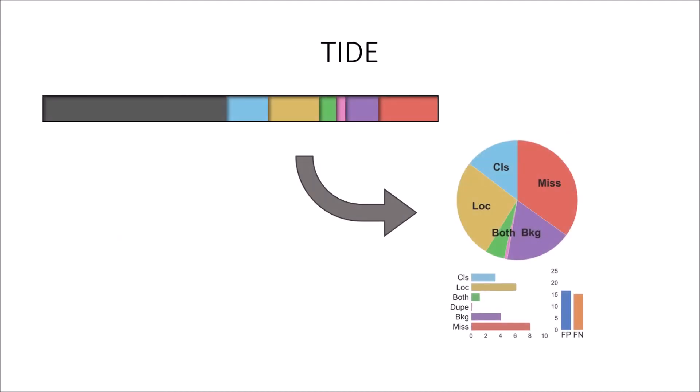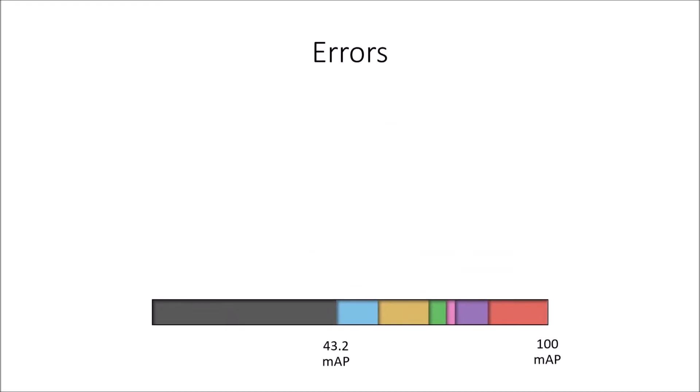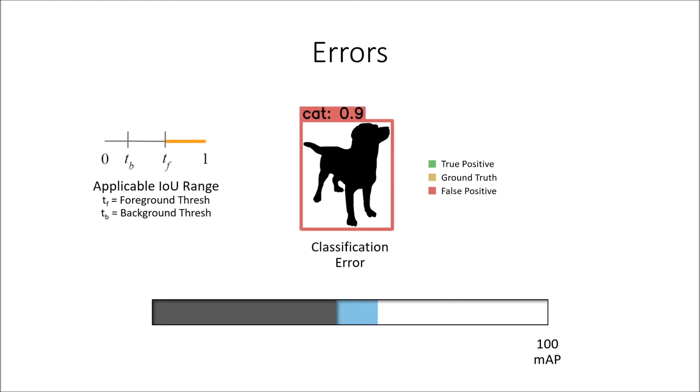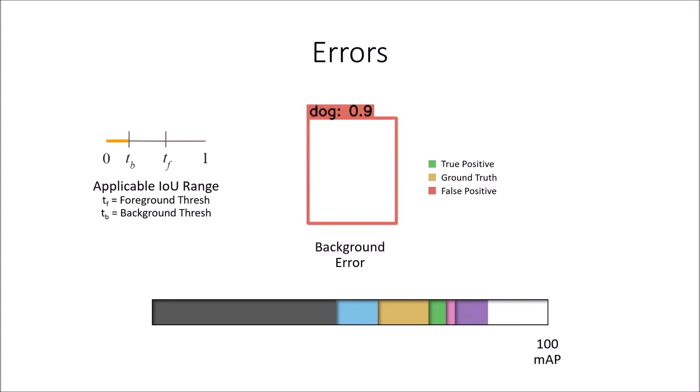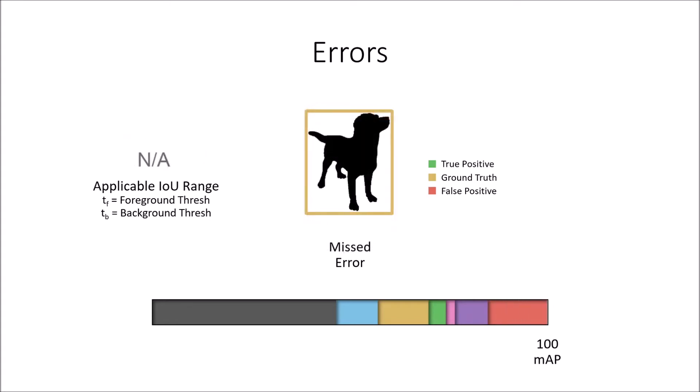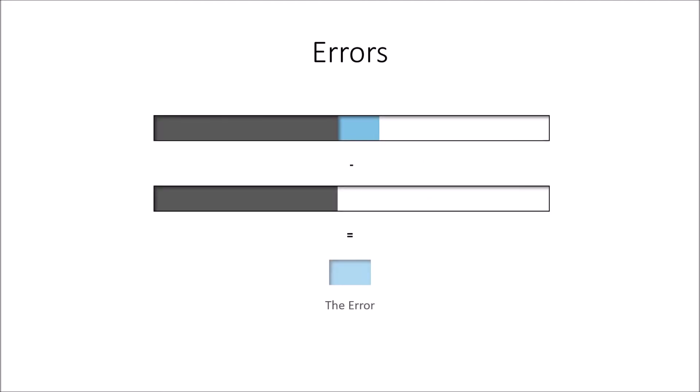When designing TIDE's approach, we carefully considered these issues. To compute our error summary, we first define a set of errors such that fixing all of them would result in 100 MAP. These errors are classification error for when a box fits the ground truth well but is the wrong class, localization error for when a box is the correct class but doesn't fit the ground truth well, both for when the box is both misclassified and mislocalized, duplicate for when two boxes match the same ground truth, background for when a box doesn't overlap with any ground truth, and finally, missed, for ground truth the detector completely missed. Then, we measure each error's contribution to the missing MAP by taking the difference between the MAP with that error fixed and the original MAP of the model. Since we compute these errors individually, this method doesn't have the same issues with reordering like the CocoaEval toolkit does.